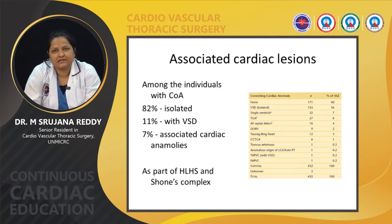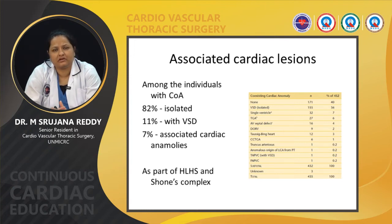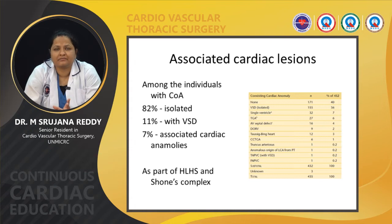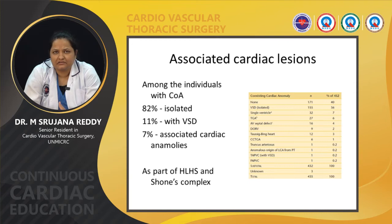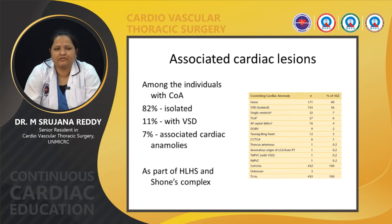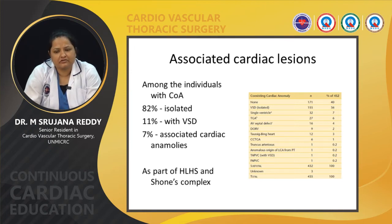Regarding associated cardiac lesions, 82% of coarctation patients have isolated coarctation of aorta, while 11% are associated with ventricular septal defects and 7% are associated with other cardiac anomalies. Higher prevalence is seen in cases of left-sided obstructive lesions, and hence coarctation is also a common association of hypoplastic left heart syndrome and Shone's complex.